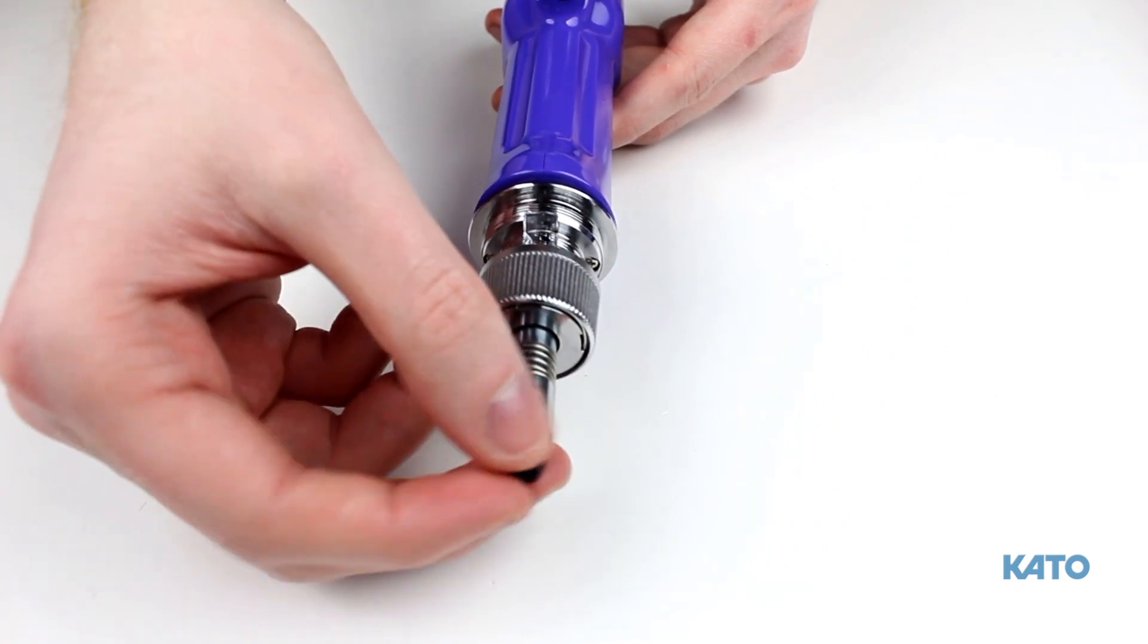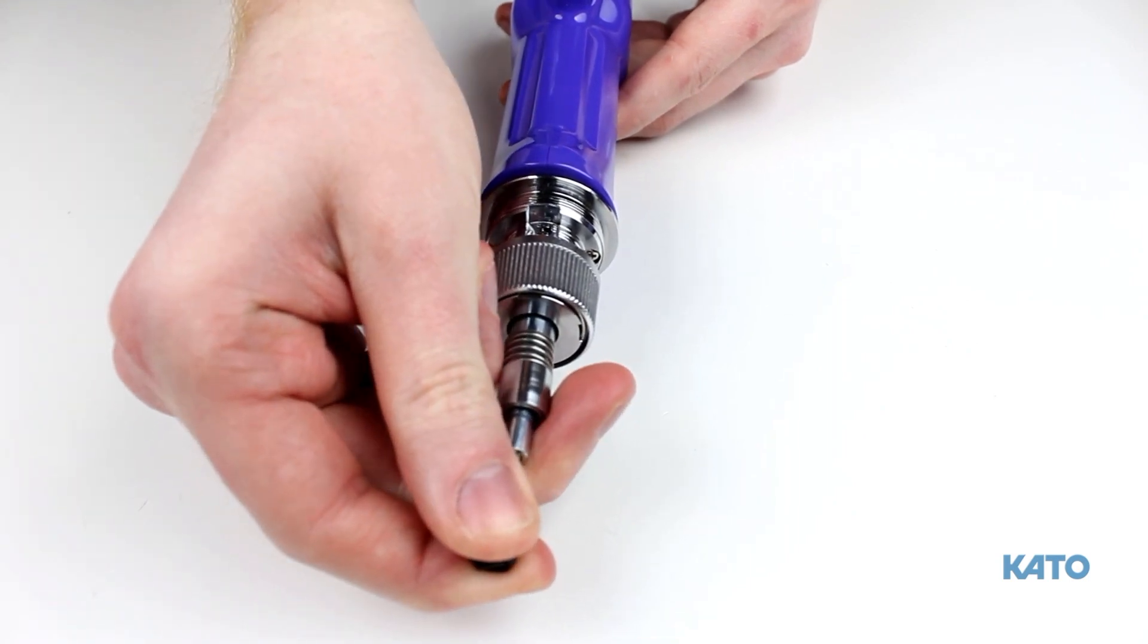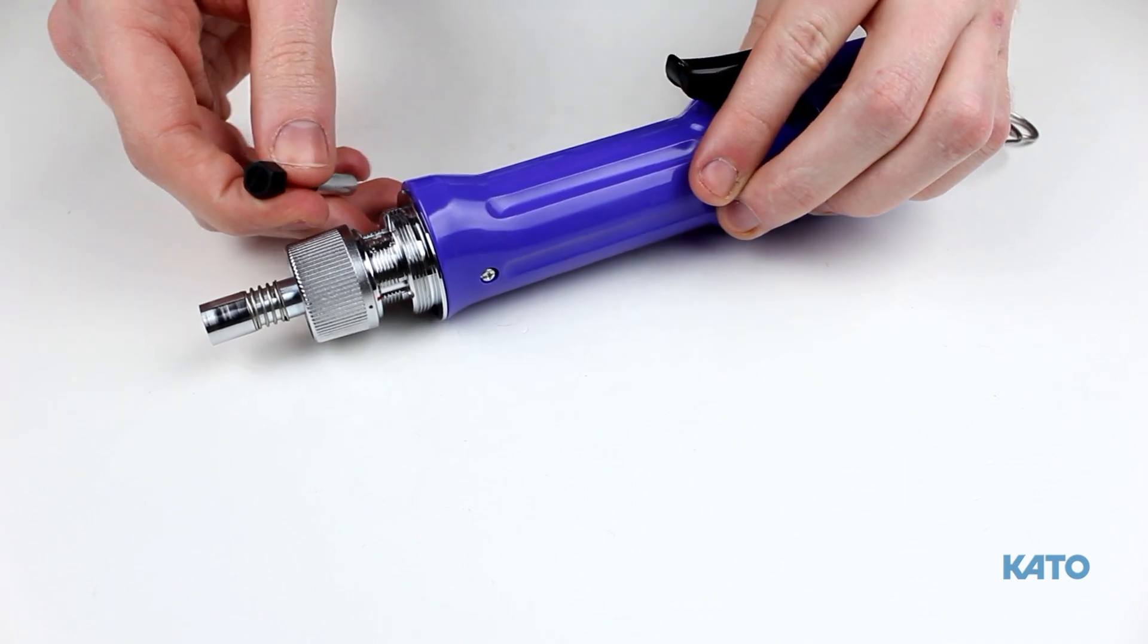Slide the trigger bolt into the driveshaft and turn clockwise a few times. Pull the trigger bolt out of the driveshaft. The magnetic stop should come out with it.